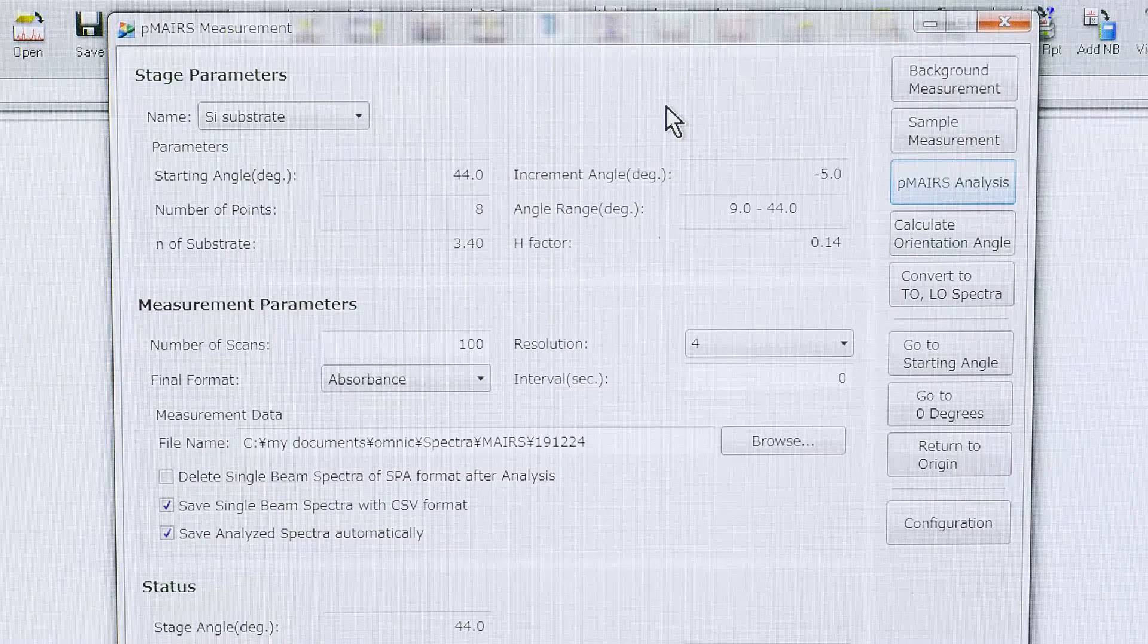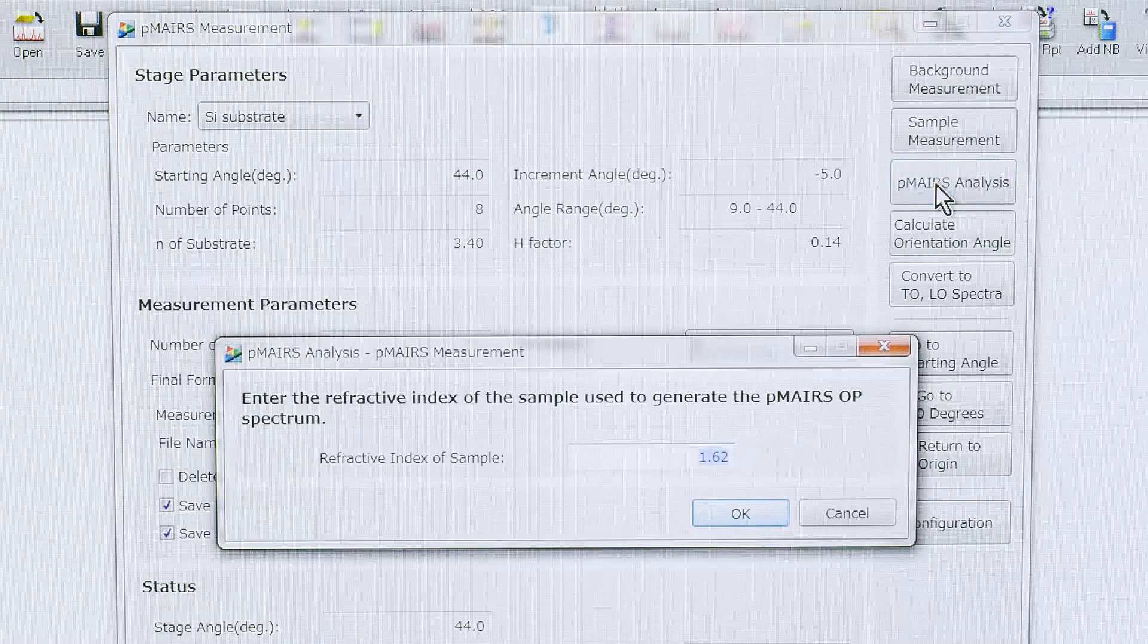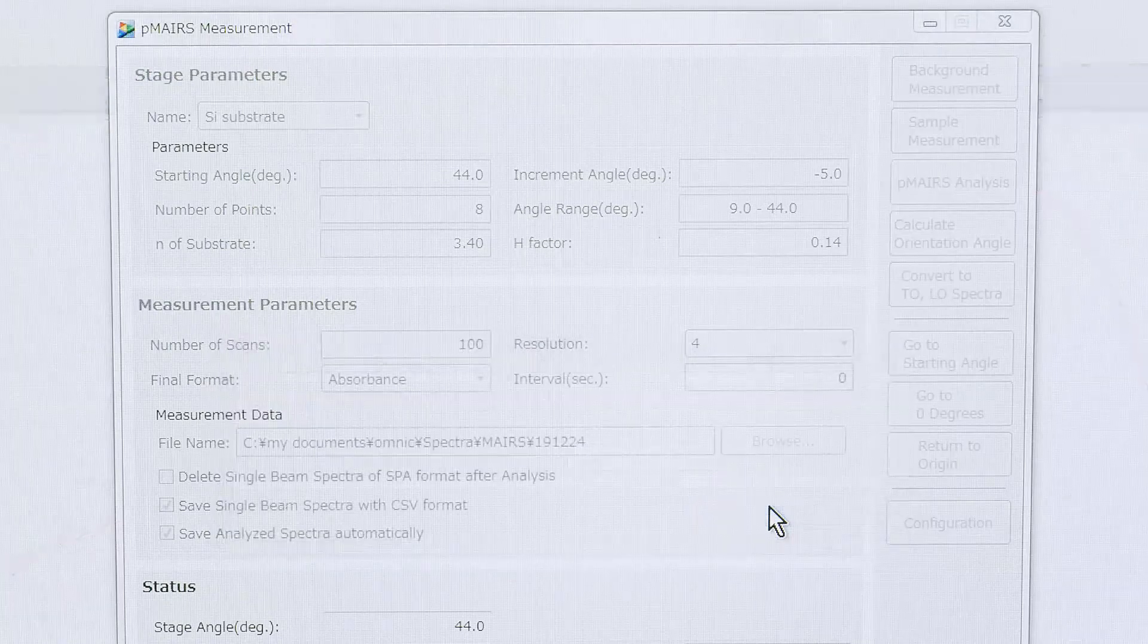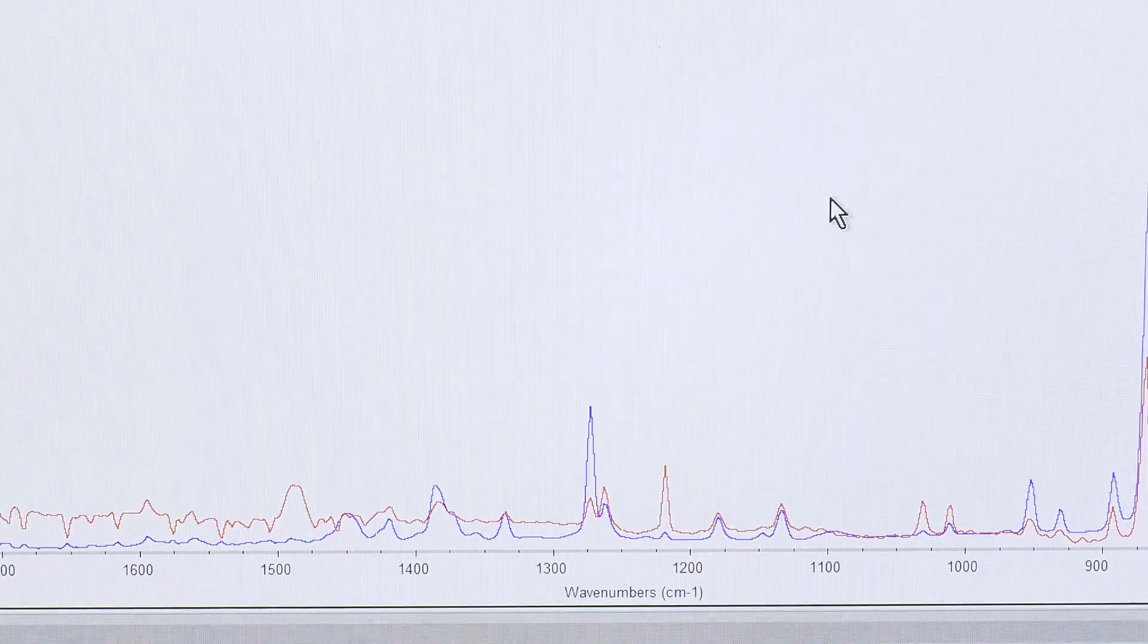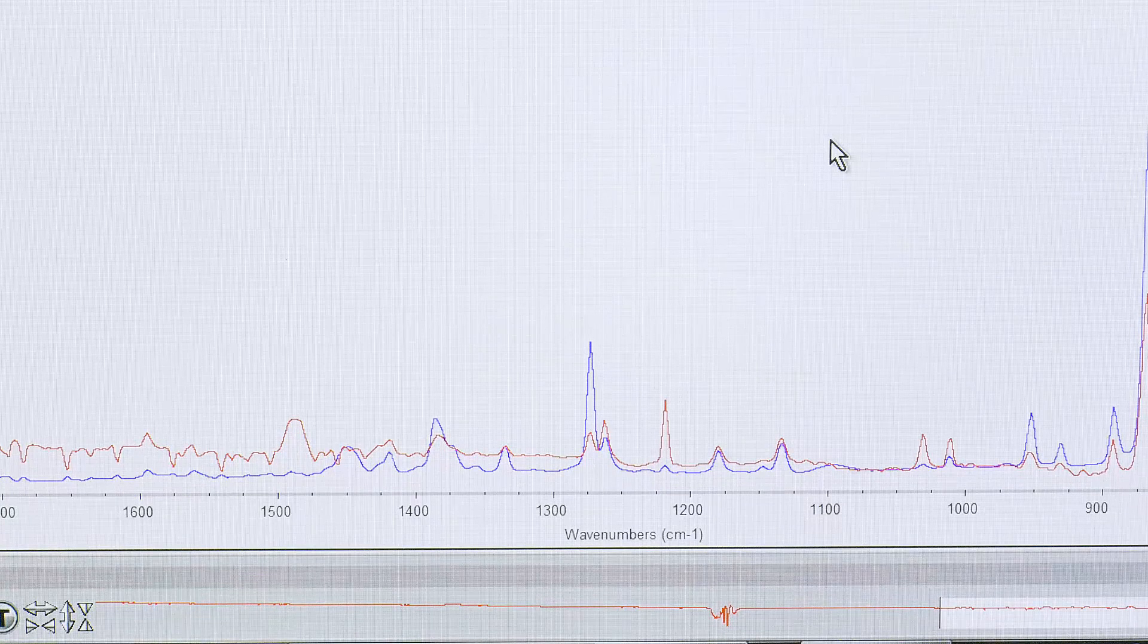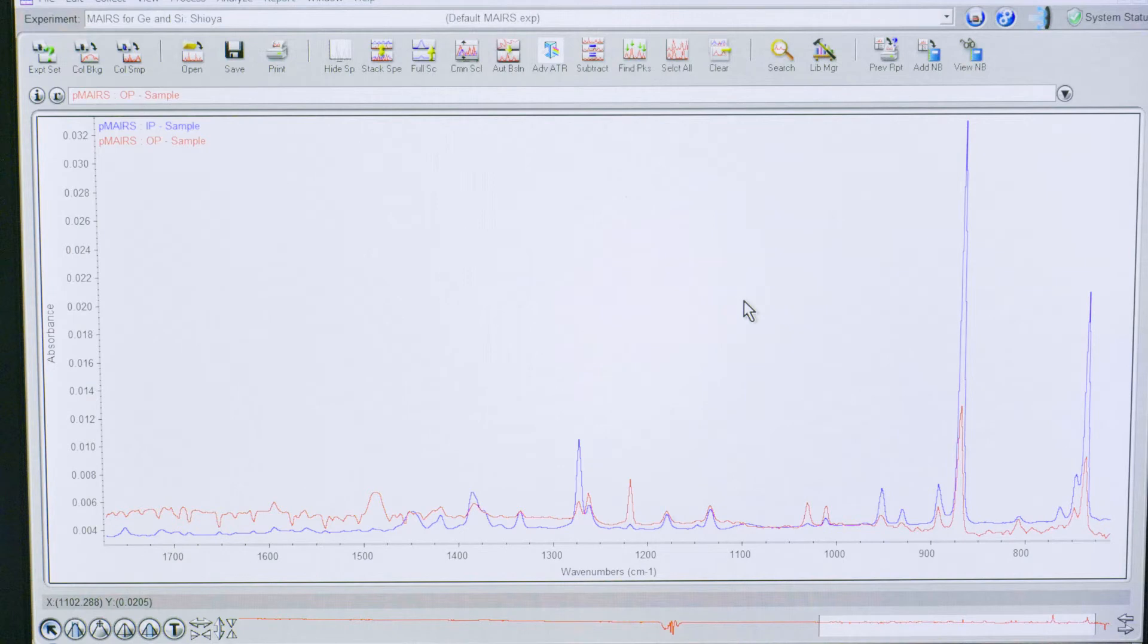After that, what we have to do is simply pressing this MAIRS analysis button. The MAIRS IP and OP spectra soon appear on the screen. These are spectra before the baseline correction, but you find an apparent difference between the IP and OP spectra indicating a significant molecular orientation in the film.